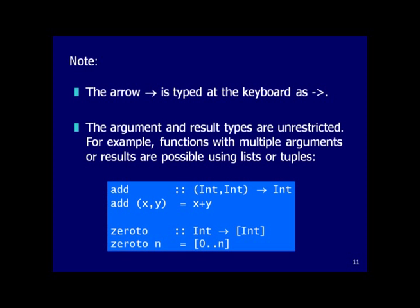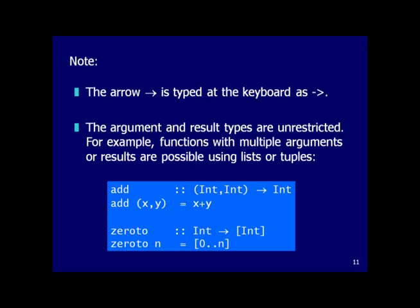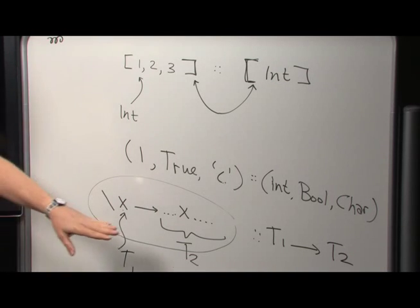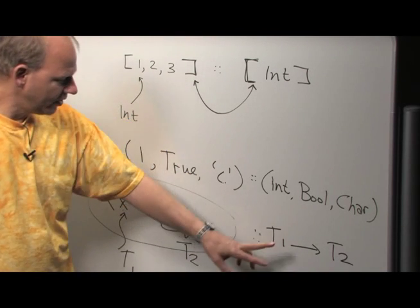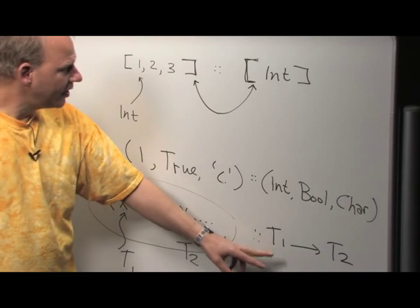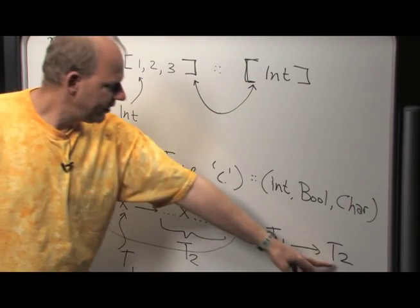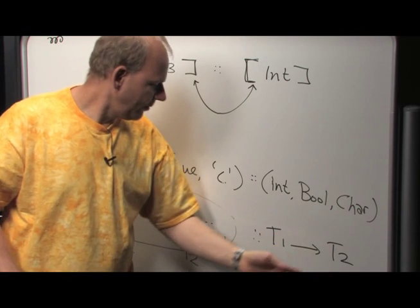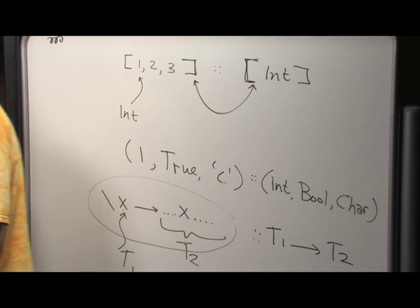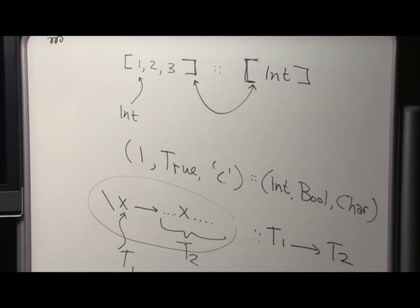Just like with all other types, for functions the argument and result types are unrestricted. T1 can be a list, T2 can be a tuple, or T1 can be another function — just like with generics, there are no restrictions here.